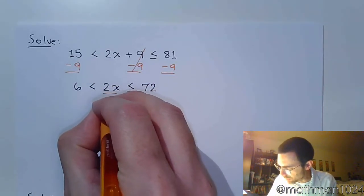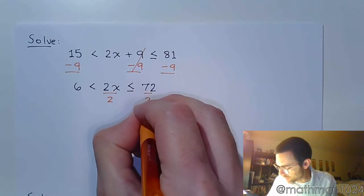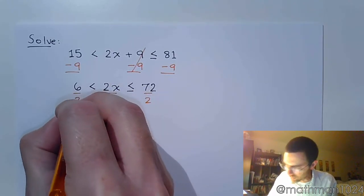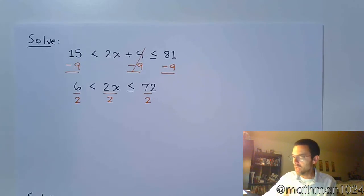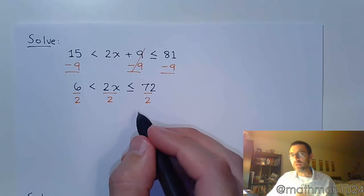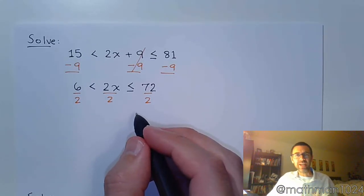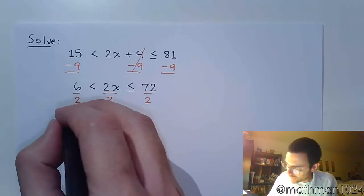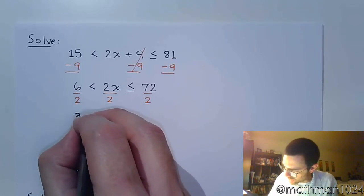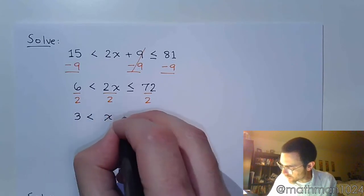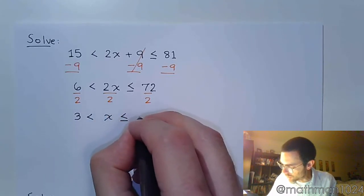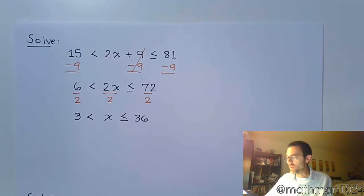Well, that's just dividing both sides by 2, just like this. Notice we're dividing by a positive number, so there's no need to change the direction of the inequality. So, this stays as 3 is less than x, which is less than or equal to 36.